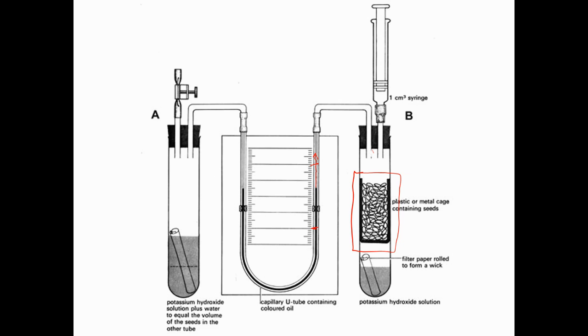Now, there are a few other features of this respirometer that make it useful. First of all, the seeds are absorbing oxygen, but they're also producing carbon dioxide. And the carbon dioxide would increase the pressure in boiling tube B. So it's all very well and good them taking in the oxygen, but if they're also releasing carbon dioxide, it will counteract the change in pressure and the oil will move.